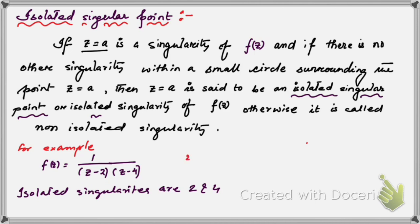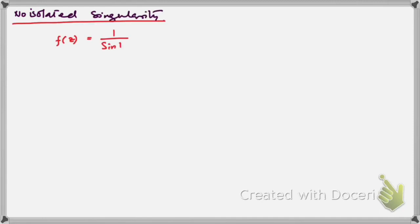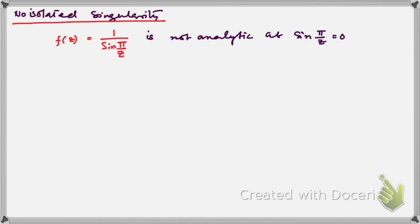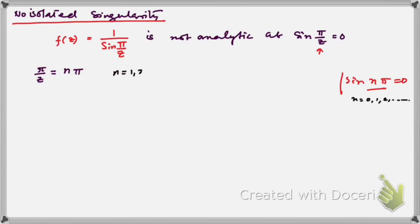Now let us discuss non-isolated singularity. Suppose we have the function f(z) = 1/sin(π/z). This function is not analytic when sin(π/z) = 0, because then the function is undefined. The general solution of sin(θ) = 0 is θ = nπ, where n = 0, 1, 2, 3, and so on.